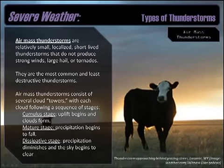Air mass thunderstorms consist of several cloud towers, which are pretty diagnostic because the uplift that occurs in these storms basically creates what look to be multiple towers of clouds. There are a few stages that these air mass thunderstorms pass through: there's a cumulus stage, a mature stage, and a dissipative stage. I'll talk about those on the next few slides.